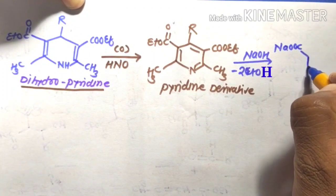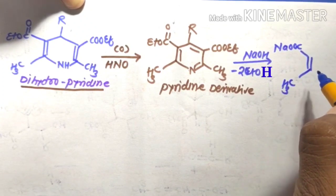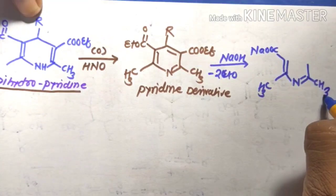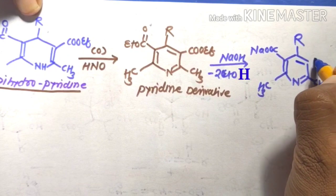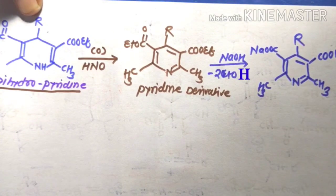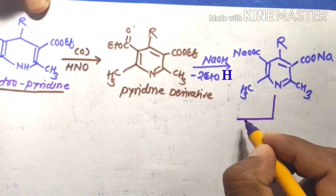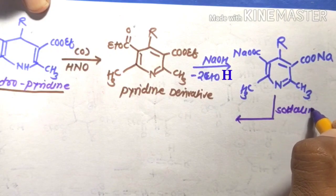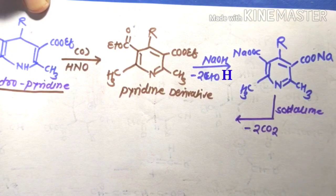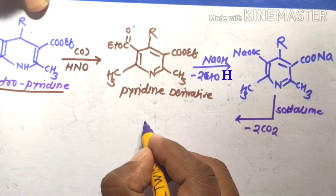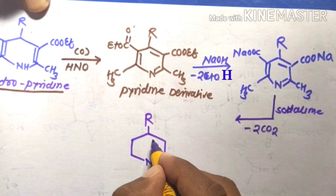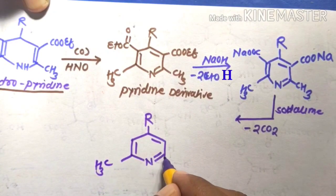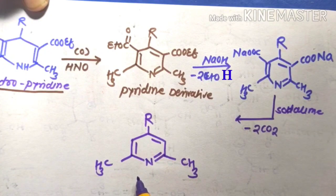The sodium salt of the pyridine derivative has the structure with CH3, N, R, and COO⁻Na⁺ groups. This salt then reacts with soda lime, resulting in elimination of 2 mol of CO2 to form the substituted pyridine. The final substituted pyridine structure contains R group, N, CH=, CH3, and CH3 substituents.